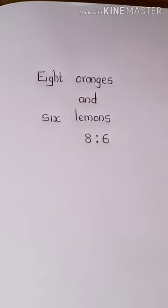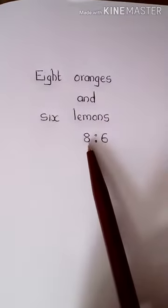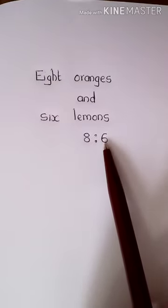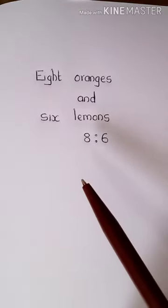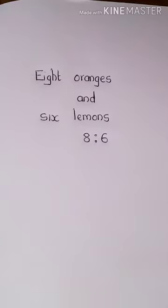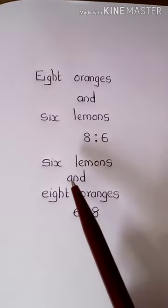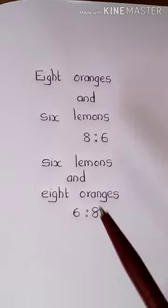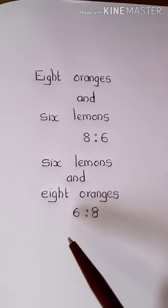Here in this example, eight oranges and six lemons are in a basket, so the ratio of oranges to lemons is 8 is to 6. While writing a ratio, the order of the numbers is very important. If I ask you the ratio of lemons to oranges, the ratio will be 6 is to 8. So the order of the numbers in the ratio is very important.